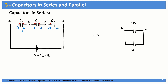Without going further, we have already found an important piece of information: capacitors connected in series are going to have the same charge on them. For our equivalent capacitor, the plate connected to the positive terminal of the battery has charge Q, and the plate connected to the negative terminal has minus Q. So the equivalent capacitor will have the same charge as each individual capacitor.